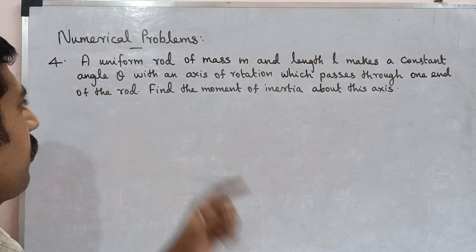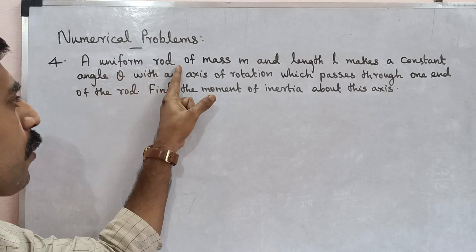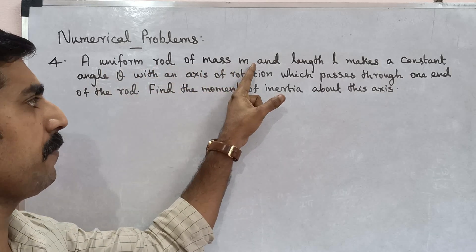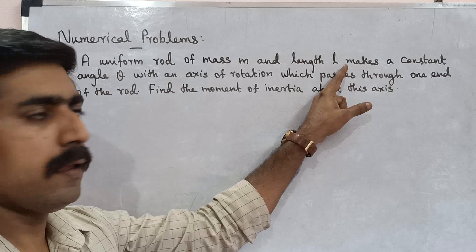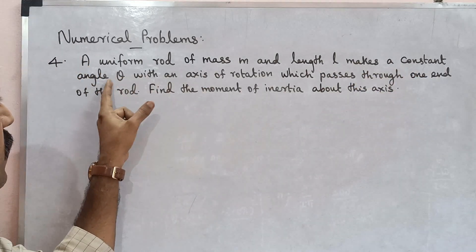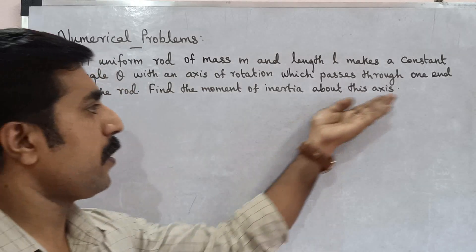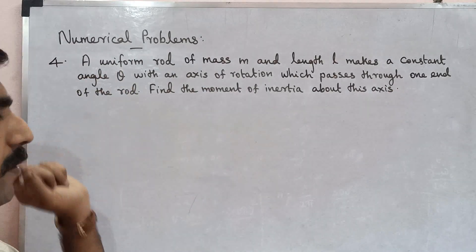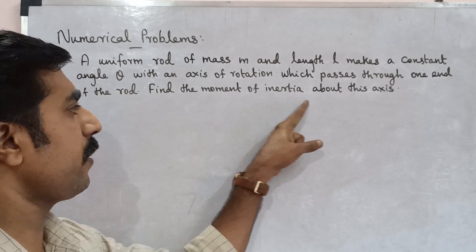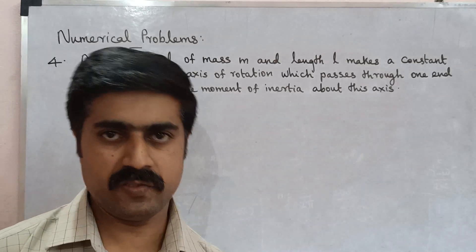What do you want to say? A uniform rod of mass M and length L makes a constant angle theta with an axis of rotation which passes through one end of the rod. Find the moment of inertia about this axis.